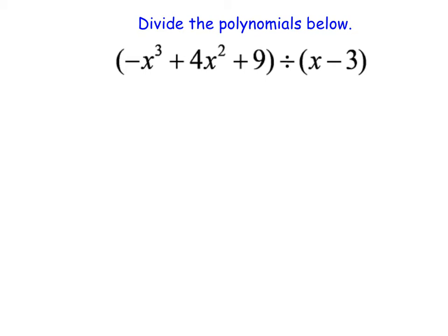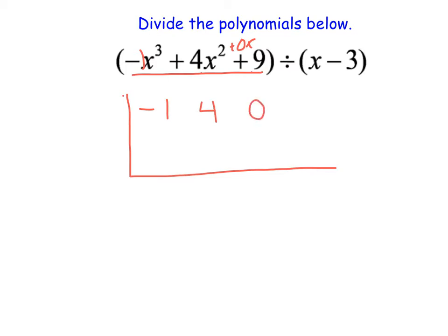Now let's jump in and do an example. When we set up synthetic division, just like with polynomial division, we pay close attention to the terms inside the first polynomial and make sure we account for every single possible exponent. Here I notice I have negative 1x cubed plus x squared. I'm missing the x term, so I'm going to add that in as plus 0x, and then I have the plus 9. I'm going to set up a box, and inside this box in the very top row I'll put the coefficients in order, including any missing terms: negative 1, 4, 0, and 9 — accounting for x cubed, x squared, x, and the constant.